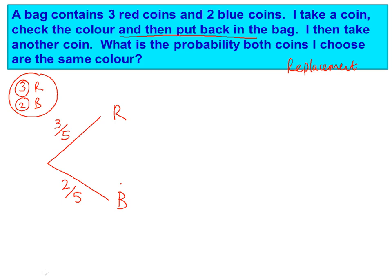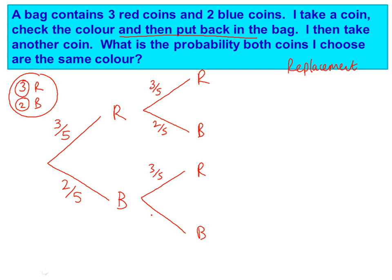Then we put it back into the bag, so we're going to make another pick now. We complete our tree diagram with the second set of arrows. Red and blue go on the end of all the arrows, and we work out the probabilities again. This is easy because, since we've put it back in the bag, the probability of a red is still three out of five and the probability of a blue is still two out of five. On the bottom branches, we have red at three out of five and blue at two out of five. Basically, with a replacement question, all of the probabilities stay the same.